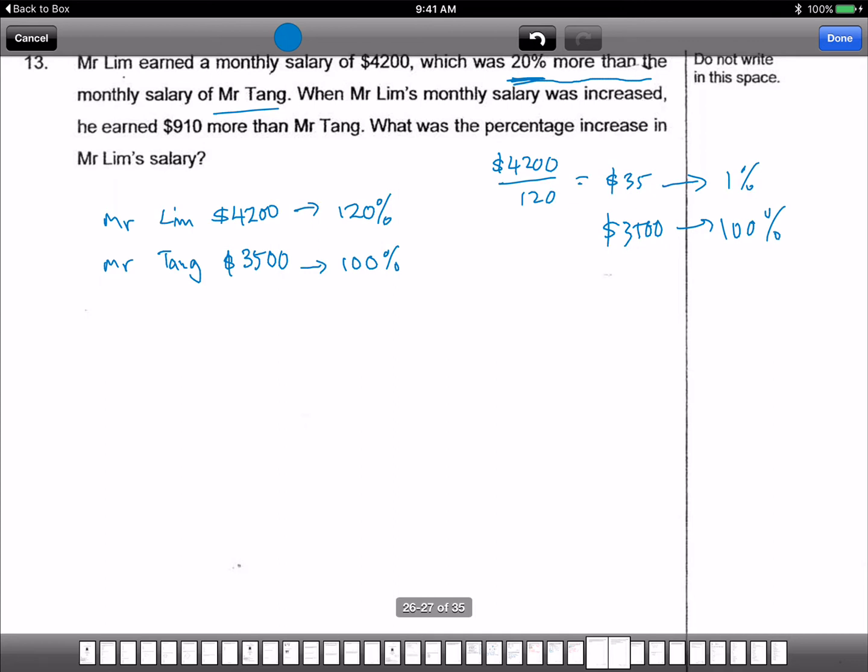Mr. Tang earned $3,500. The difference between him and Mr. Lim's salary - Mr. Lim's salary is $700 difference. If it's $910, the increase is $210. And 10% is $420, and 5% is $210. Oh, okay, very good.